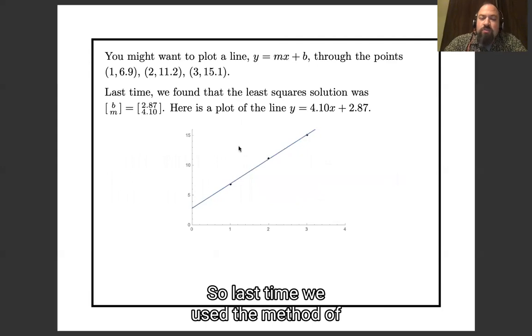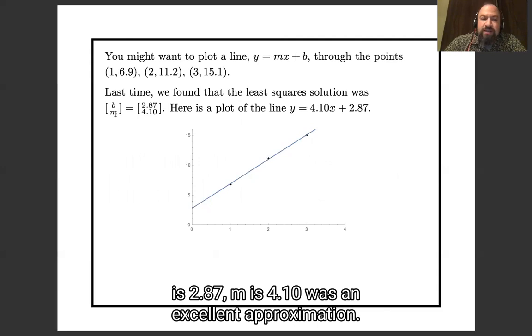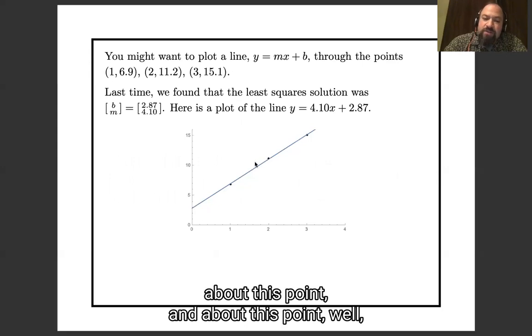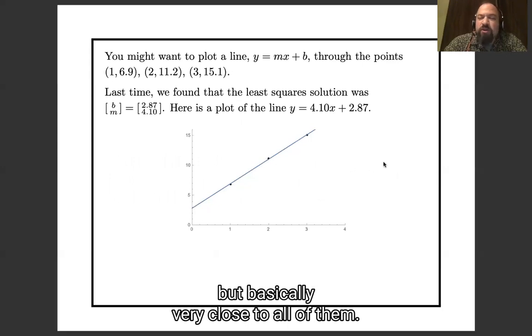So last time we used the method of least squares to find b is 2.87, m is 4.10 as an excellent approximation. And indeed, here's the line y equals 4.10x plus 2.87, and you can see it's a little above this point, a little below this one, but basically very close to all of them.